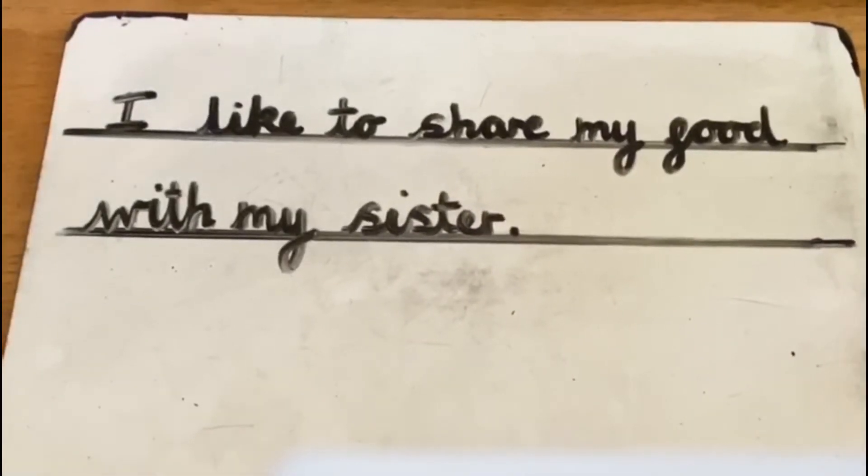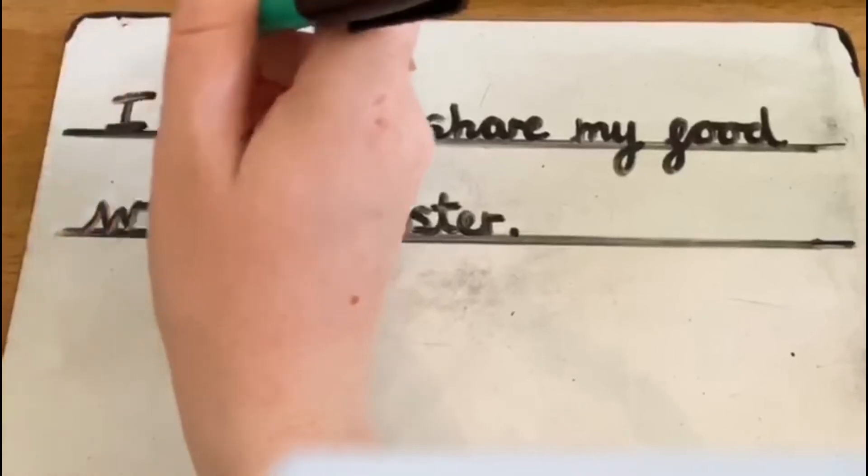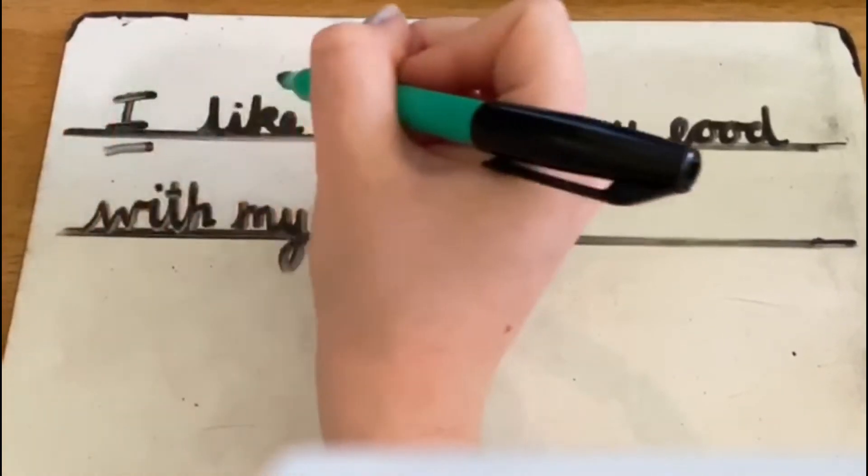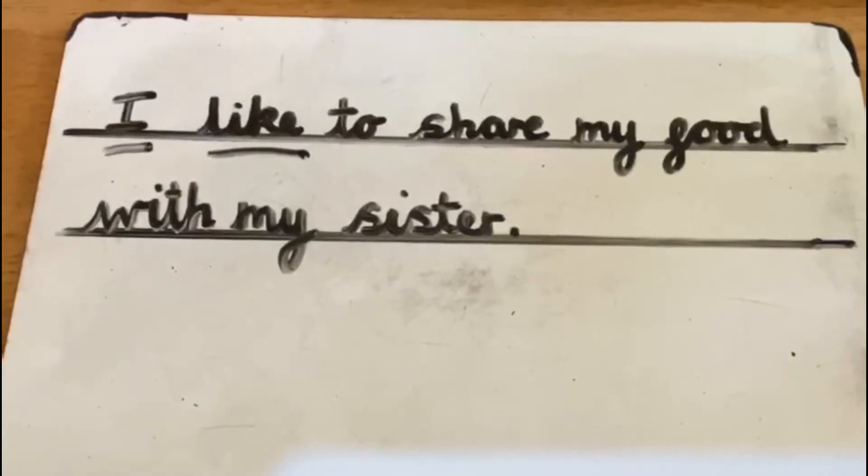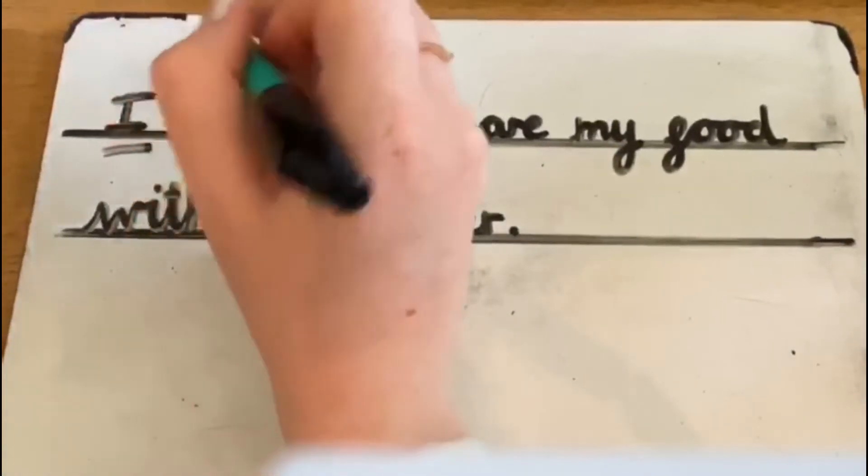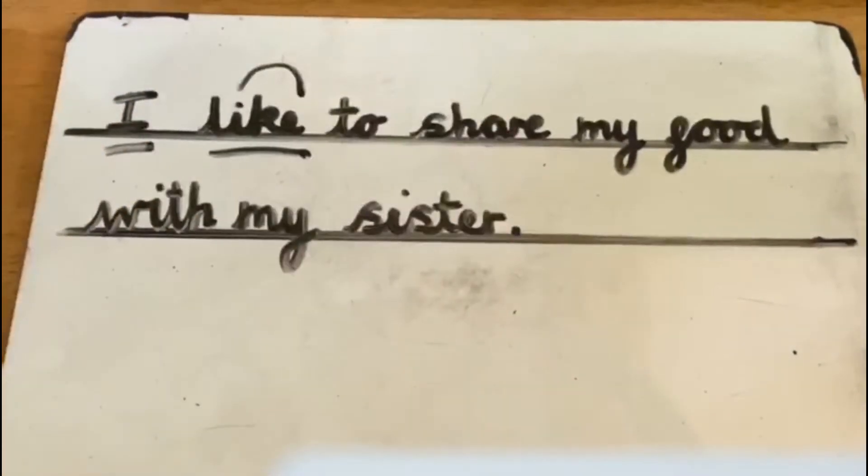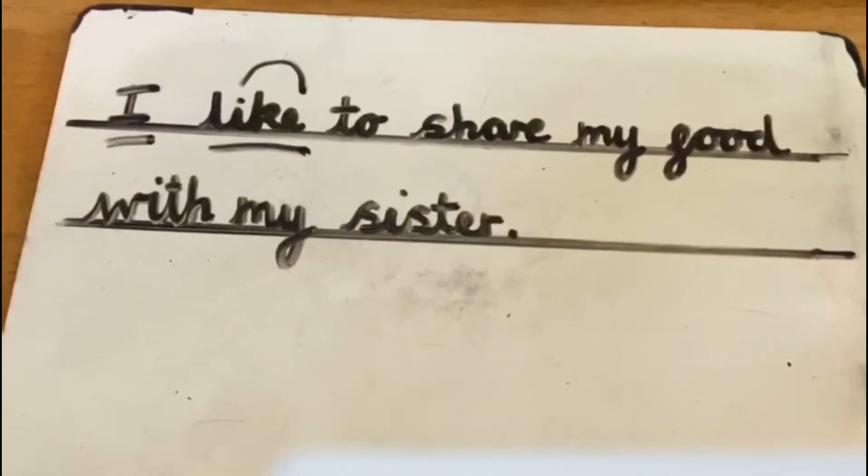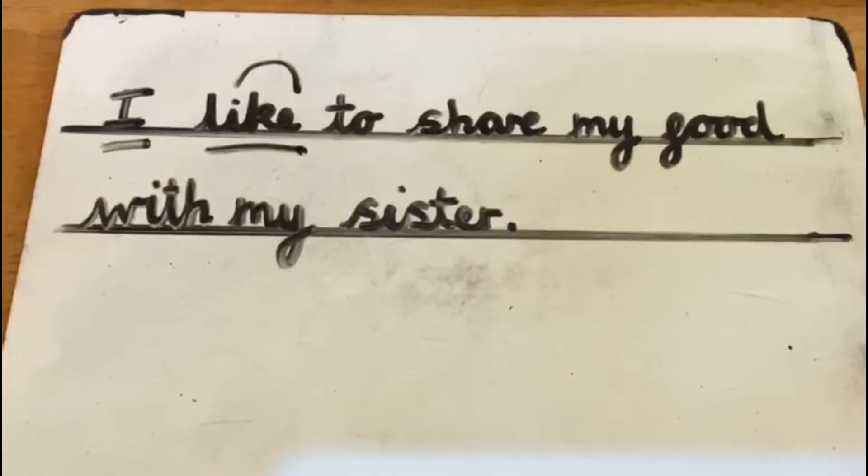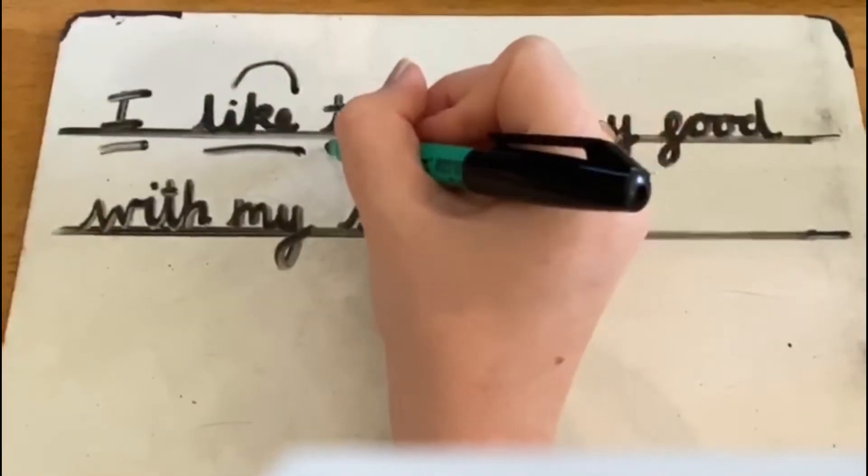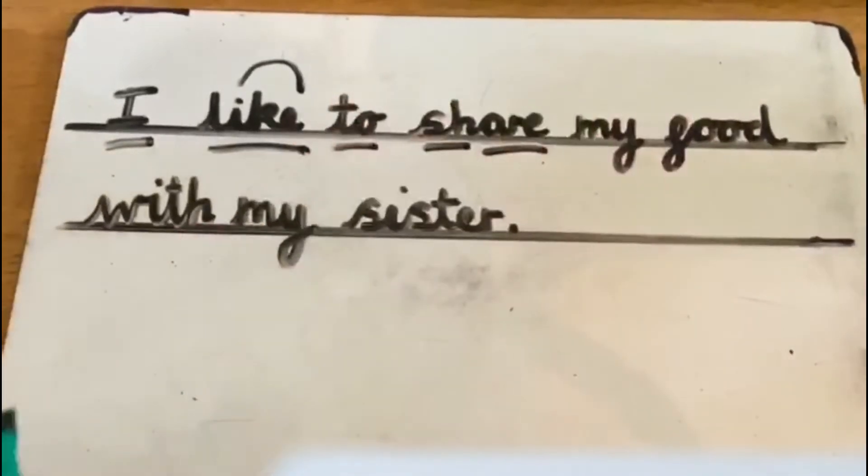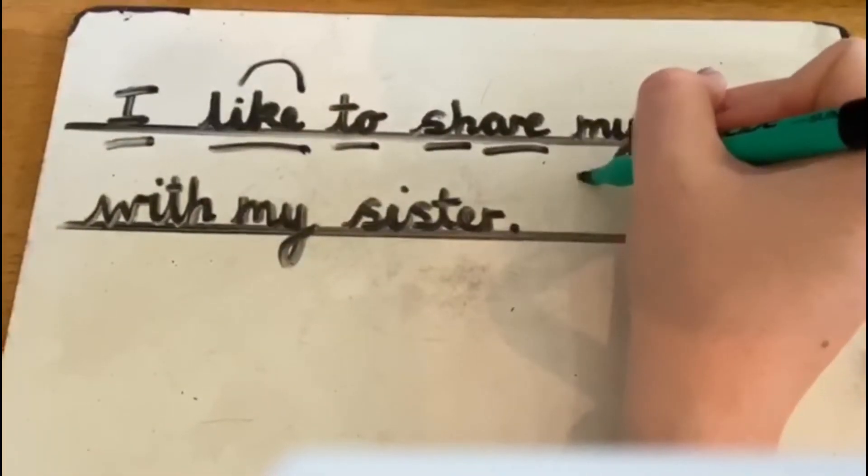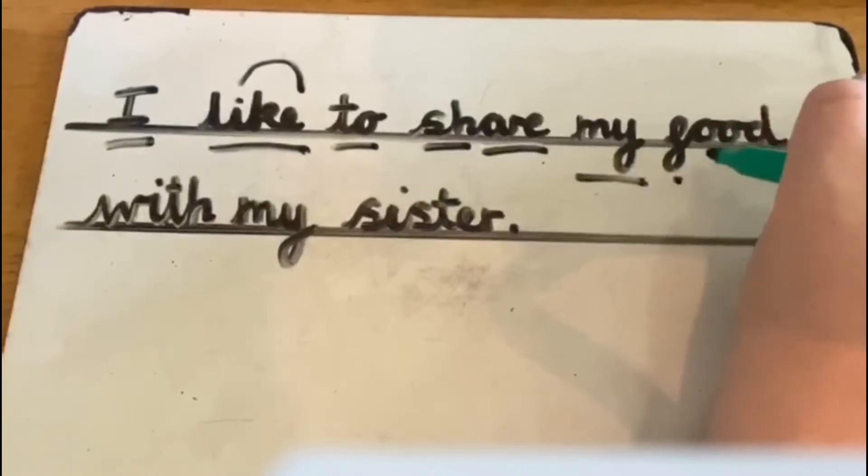Okay, let's have a go at reading this sentence then. We've got our red word, I. Like. Now we can decode this now because we've learnt the I split I diagraph. But when we first learnt it, we learnt it as a red word, so that's why I popped the line underneath. I like. To.